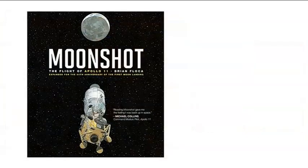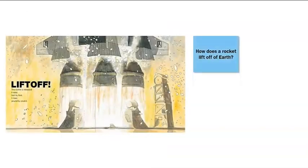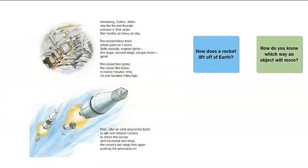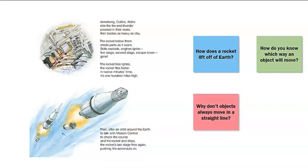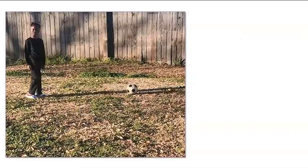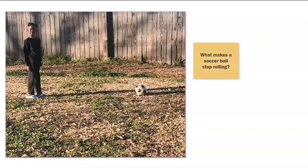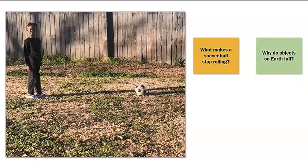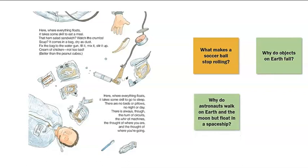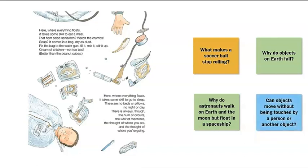After we read the book Moonshot: The Flight of Apollo 11, did you ask how does a rocket lift off of earth? Or how do you know which way an object will move? Maybe you saw the illustration of parts of the rocket falling away from the spacecraft and wondered why don't objects always move in a straight line? Or why do some objects move when others stay still? Maybe you were curious about motion on earth and asked what makes a soccer ball stop rolling and why do objects on earth fall? Maybe you wanted to ask why do astronauts walk on earth and the moon but float in a spaceship? Or can objects move without being touched by a person or another object?